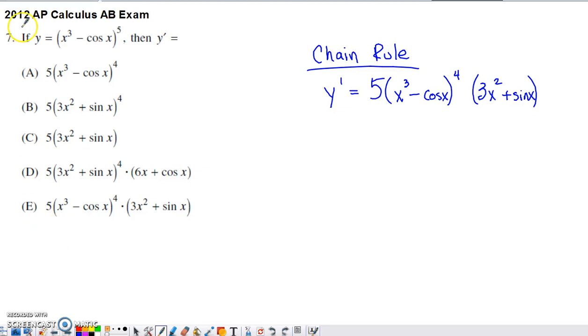This is problem number 7 from the 2012 AP Calculus Multiple Choice Set, and it's a pretty simple setup here. They give us a function y equals such and such, and they ask us for y prime. So they're basically just asking us for a derivative.